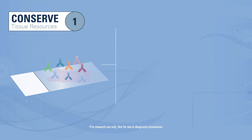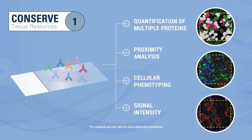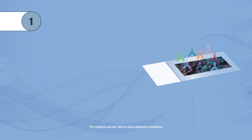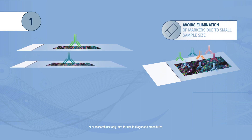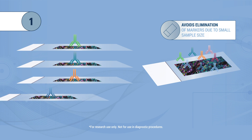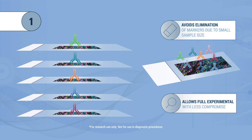Multiplex immunohistochemistry maximizes the amount of data that you can obtain from a single tissue sample. Multiplexing effectively allows multiple immunohistochemistry tests to be performed on the same sample, replacing the single-section, single-stain process. This avoids situations such as elimination of interesting markers for further research as the tissue sample may be too small. Similarly, where samples can be rare and expensive, it allows for full experimental design with less compromise.